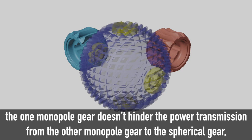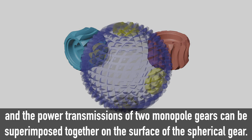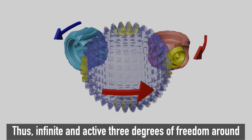With this passive sliding motion, one monopole gear doesn't hinder the power transmission from the other monopole gear to the spherical gear, and the power transmissions of two monopole gears can be superimposed together on the surface of the spherical gear.